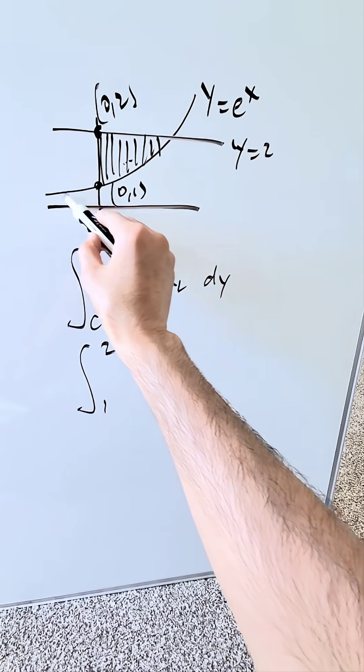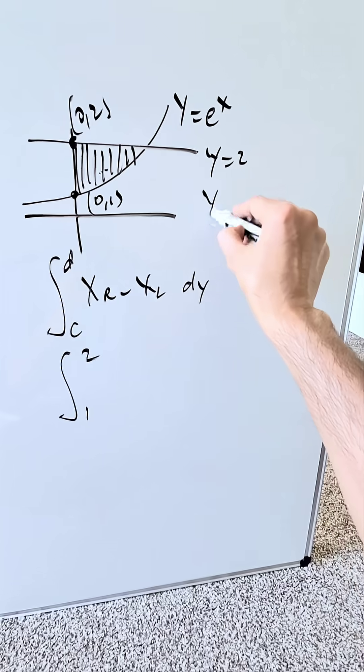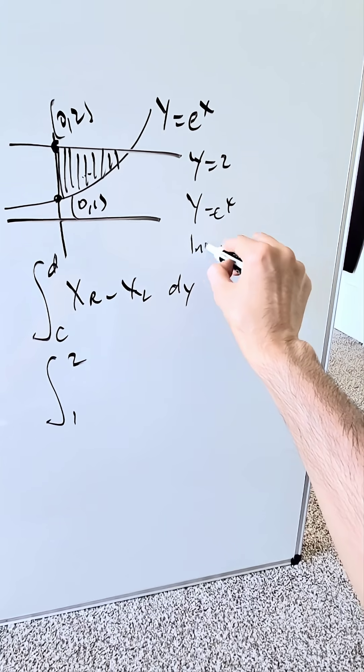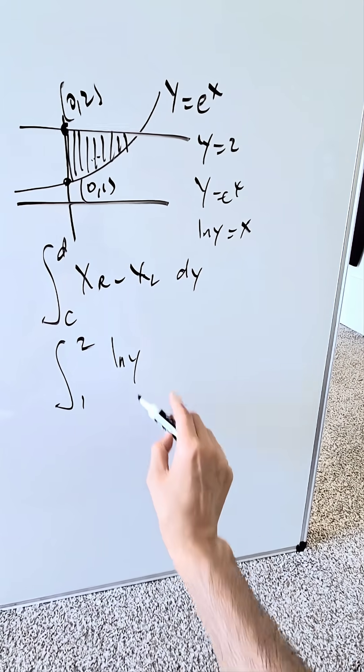What's my right boundary function? It's this exponential. If y is equal to e to the x, you have to write it in terms of x. x here is equal to natural log y. That's my right boundary function.